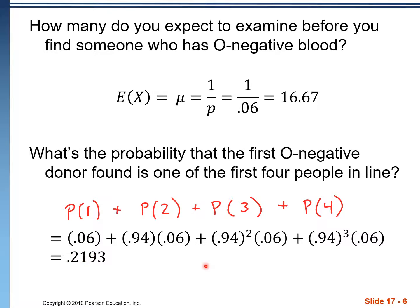There's a function in the calculator for this called geometCDF, found under distributions — the same place we find normalCDF. You put in two parameters: 0.06 for probability of success, and we're saying we want the success anywhere in the first four trials.